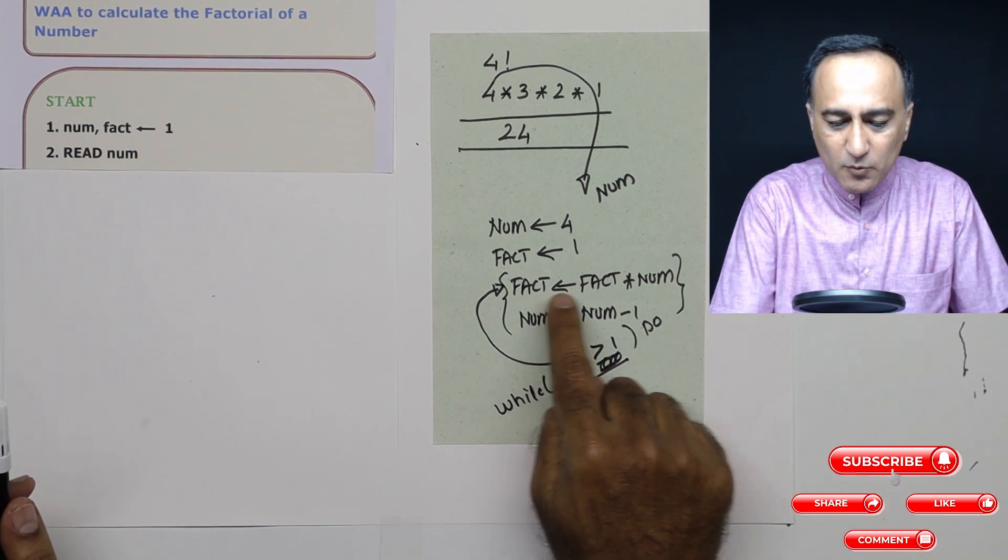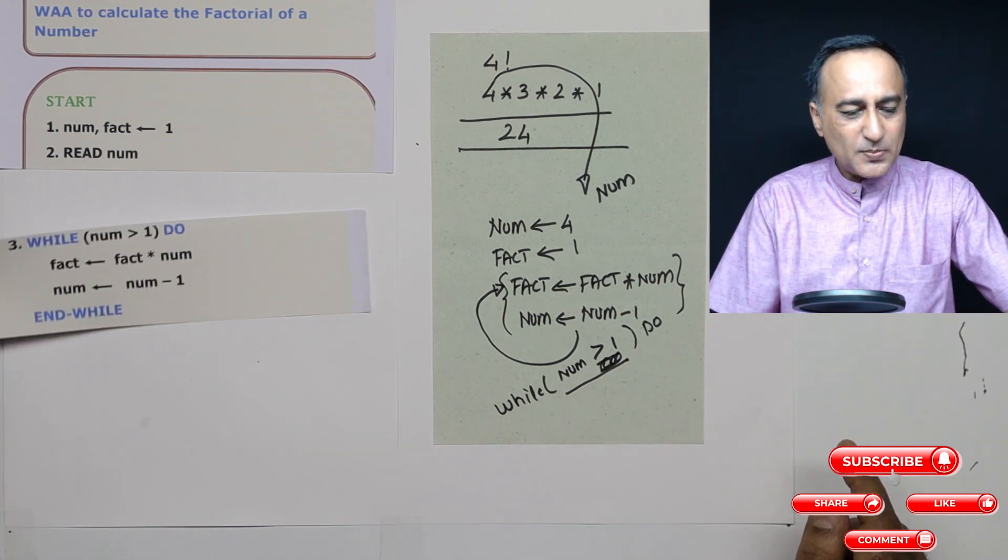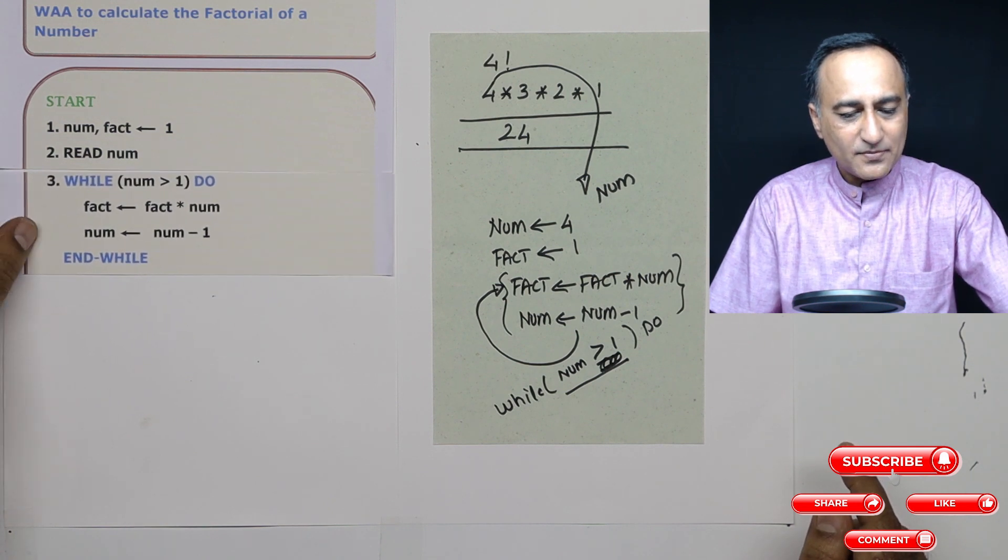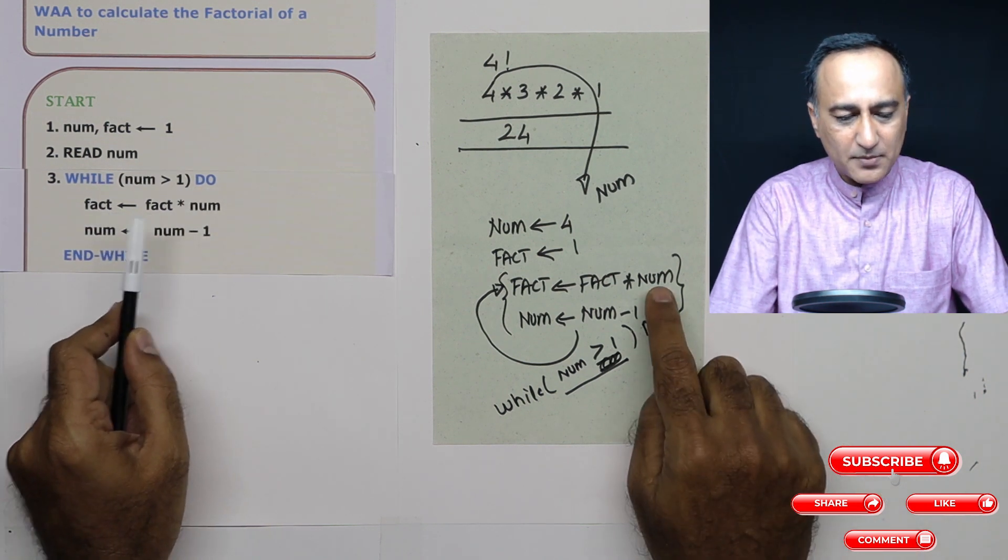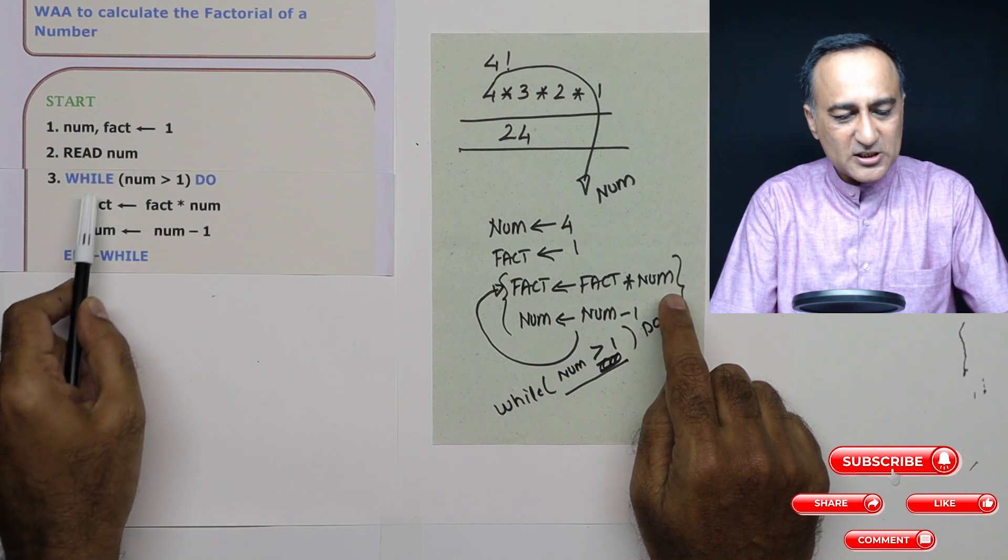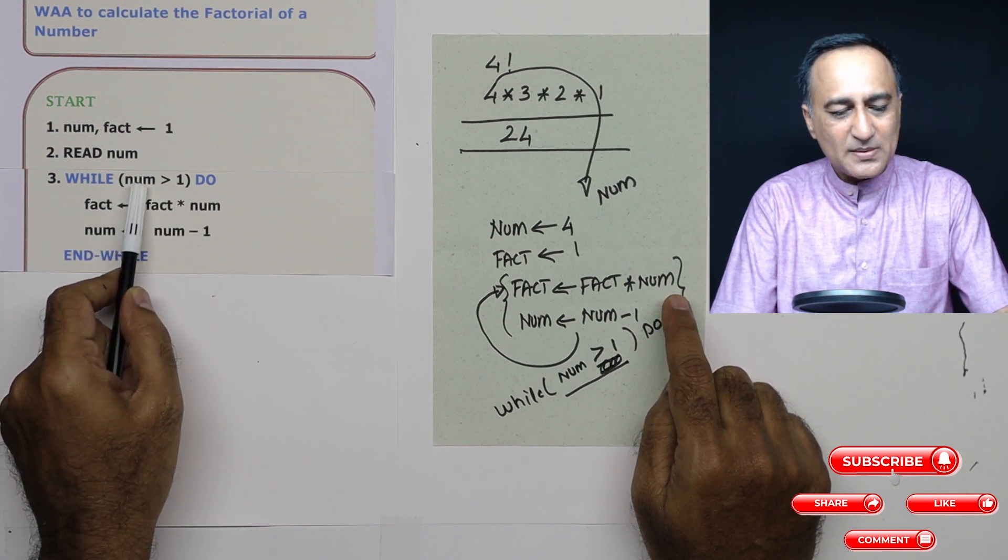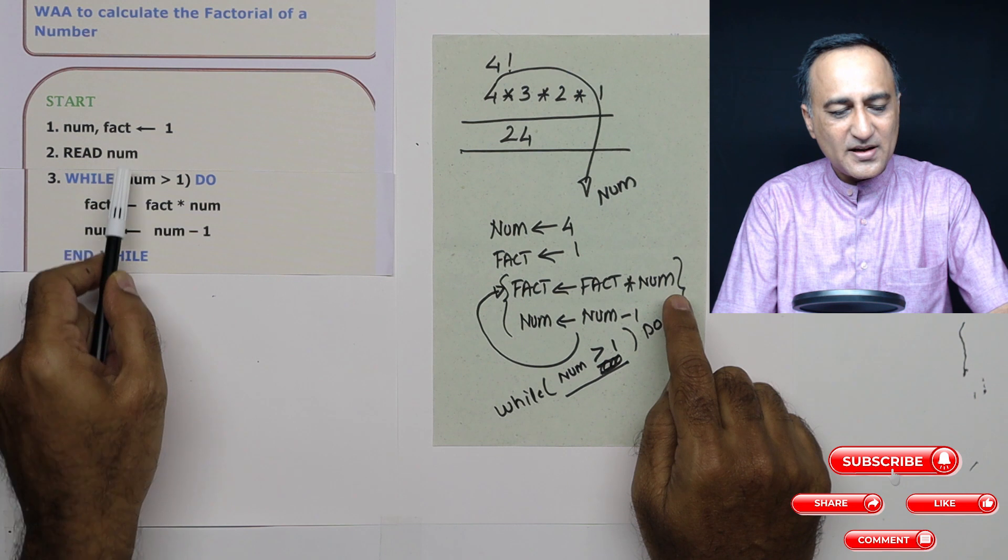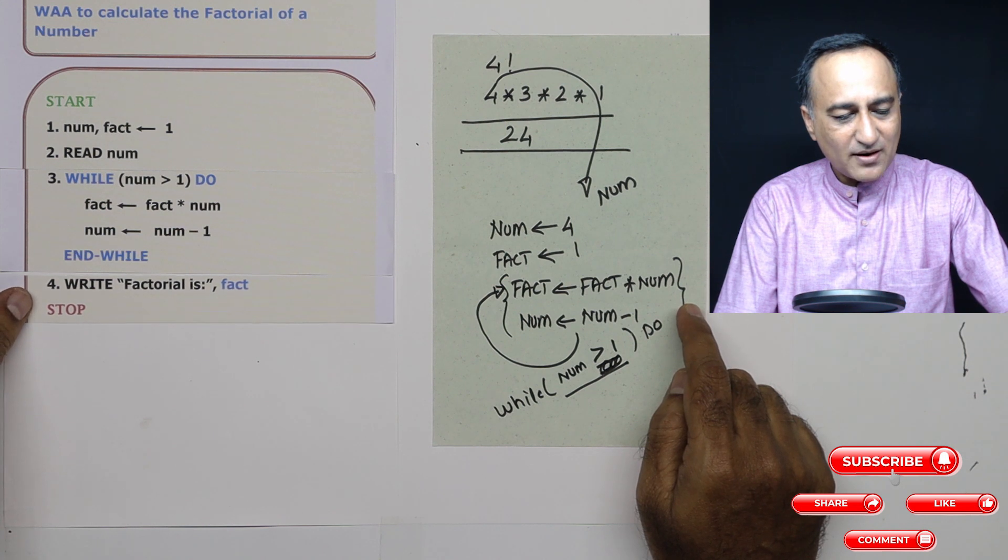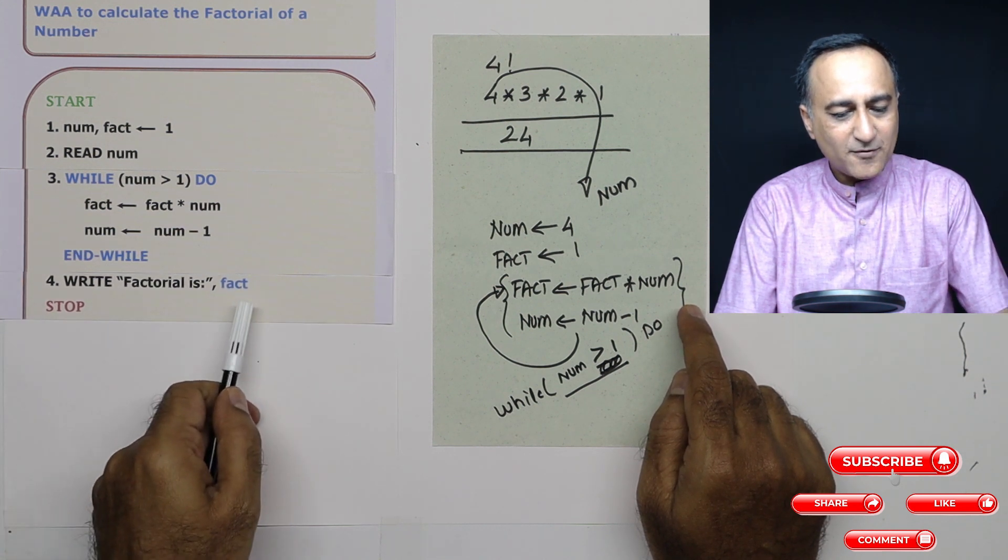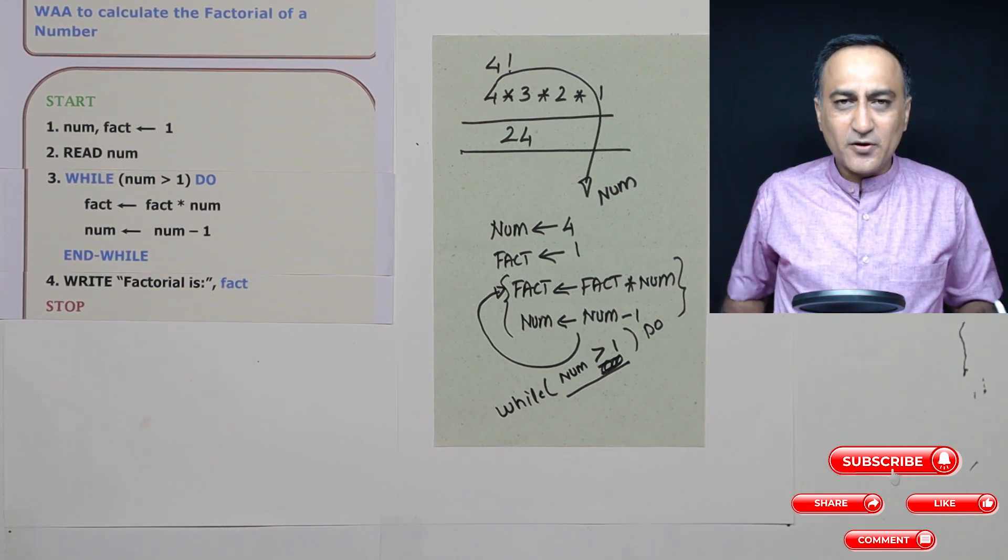I read the number from the user or from the keyboard. Then I told you how long I am going to do these two steps, while number is greater than one. So what I do here is I say while number is greater than one, do factorial is fact into number, I reduce number by one. This particular thing keeps on repeating as long as number is greater than one. And once number becomes equal to one, or if number is entered as zero, I'll directly come to step number four. And in step number four, what I will write is I will write, write factorial is fact and then I will stop. So this is the very simple logic for calculating the factorial.